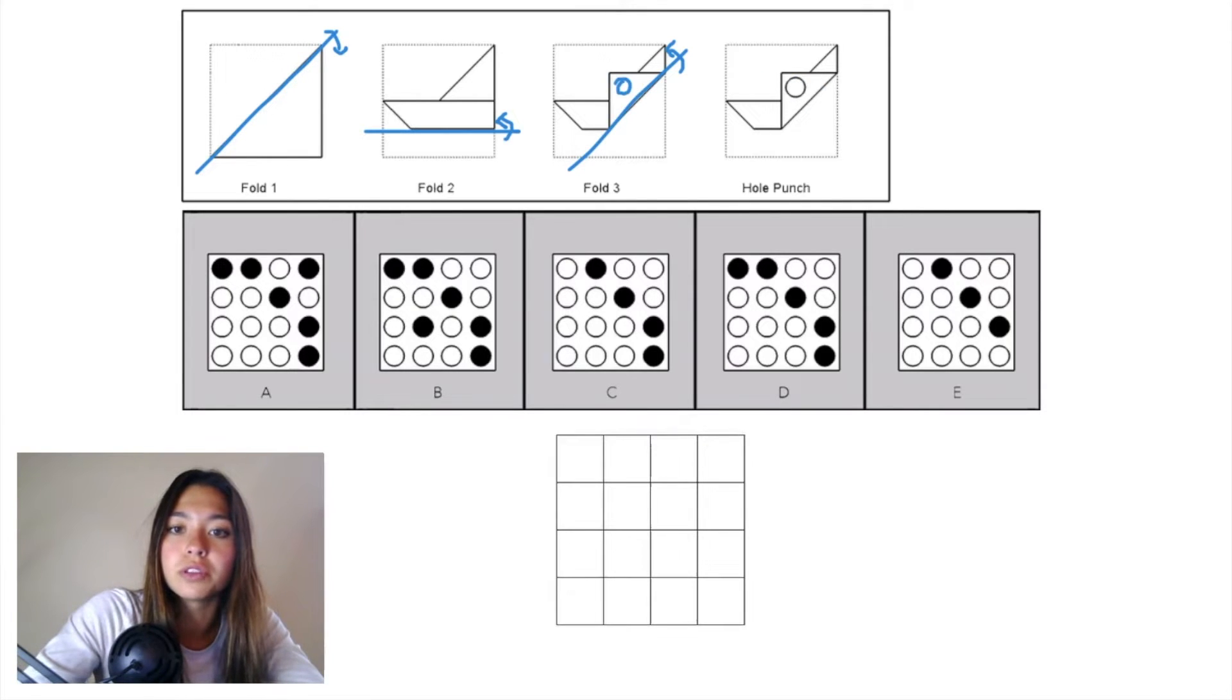If we draw that hole punch on fold 3, 2, and 1, it always ends up on paper, so we can draw it right away in our grid.